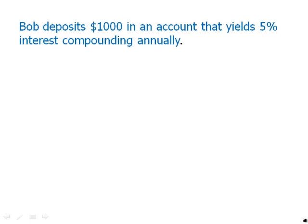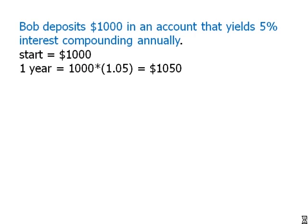That means every year, the amount in the account is going to experience a 5% increase, so it's going to get multiplied by 1.05 — the multiplier for a 5% increase. We start at $1,000. The multiplier is 1.05. Multiply by 1.05 and we get $1,050.